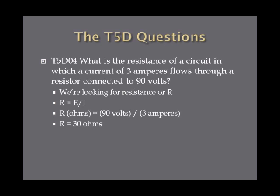What is the resistance of a circuit in which a current of 3 amperes flows through a resistor connected to 90 volts? We're looking for resistance, so R is equal to E over I. R in ohms equals 90 volts divided by 3 amperes. So R is equal to 30 ohms.